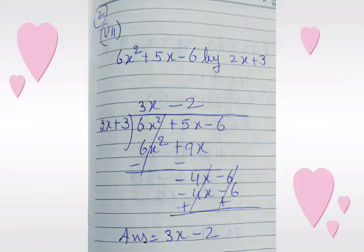We will multiply with 3x — then only we can get it. After multiplying with 3x we will get 6x squared plus 9x. According to the rule we will change the sign of the last line and then we will solve it.